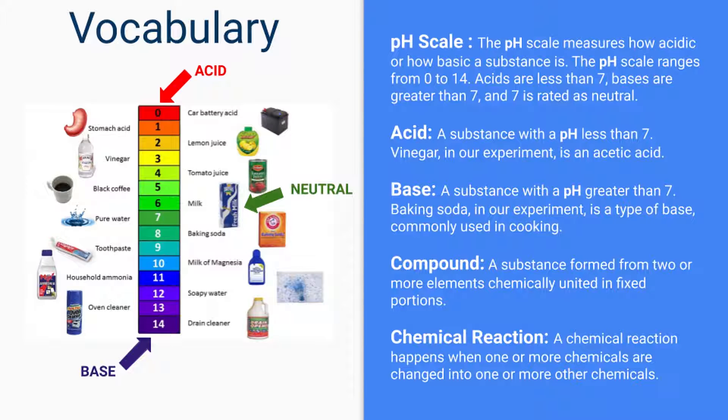A compound is a substance formed from two or more elements chemically united in fixed portions. For example, if you've ever heard water called H2O, there's a reason for that. It's made up of more than one element. It's made up of hydrogen, which stands for the H, and oxygen, which stands for the O. The reason why the two is there is because there are two molecules of hydrogen and one molecule of oxygen that come together to form water.